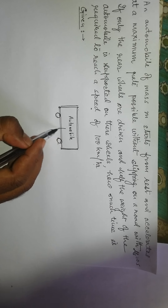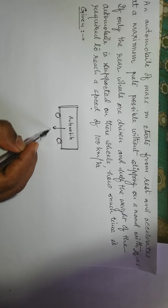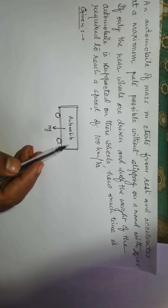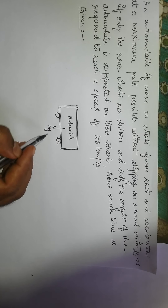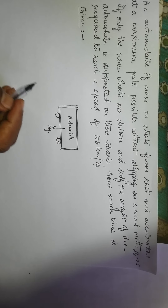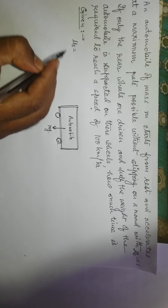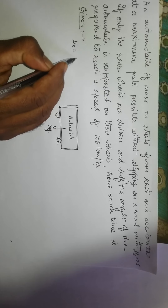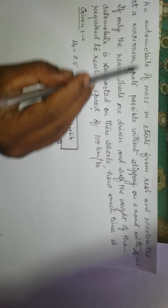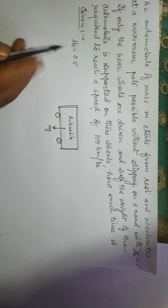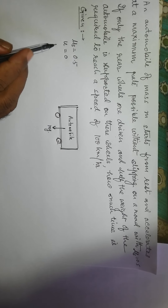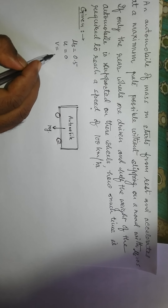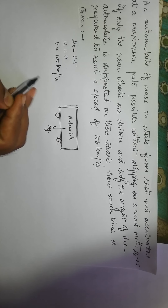We assume this is an automobile with rear wheels having some mass, so there is a weight mg acting downward. We are considering only the rear wheels are driven and half the weight is supported on them. The coefficient of static friction µs is 0.5. It starts from rest, so initial velocity u is equal to 0, and final velocity v is 100 kilometers per hour.